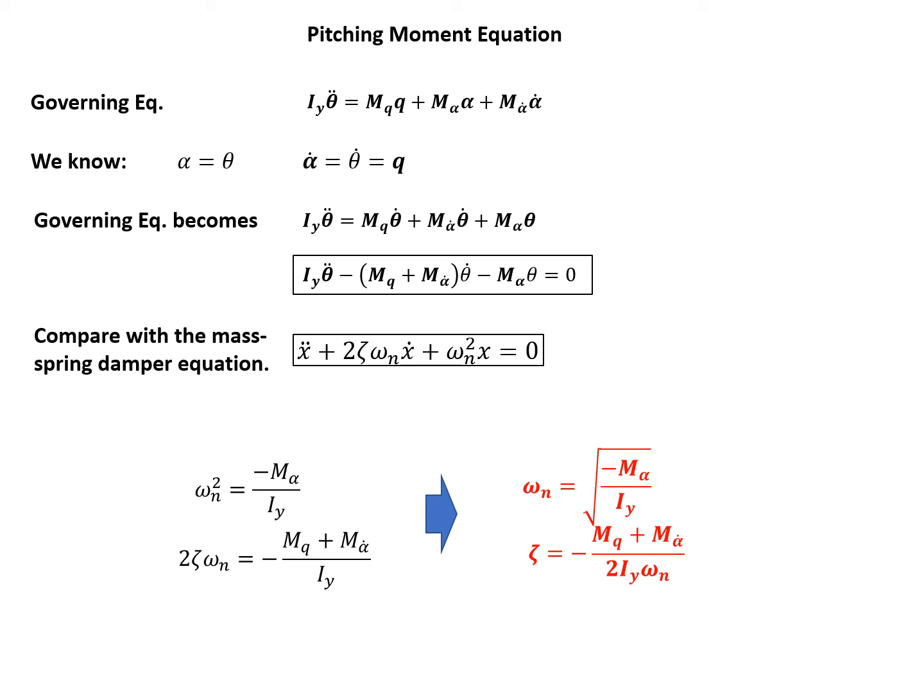So for a known aircraft, M alpha is known, I y is known, M q is known, and M alpha dot is known, so we can eventually find the natural frequency and the damping ratio for a known aircraft. So this is a procedure. We derive the pitching moment equation for SPPO.